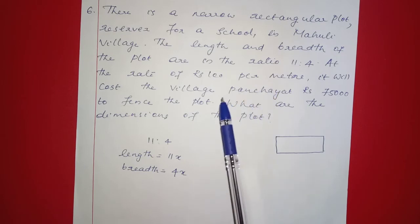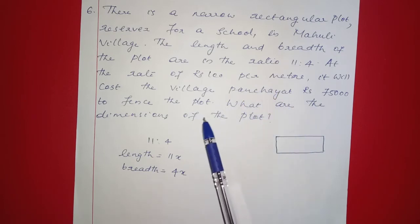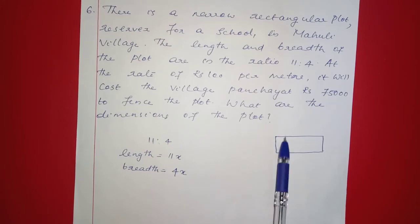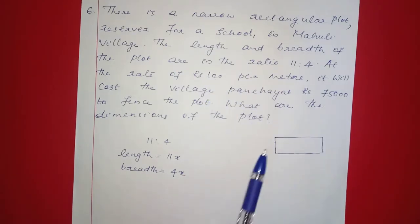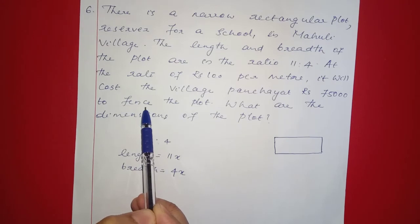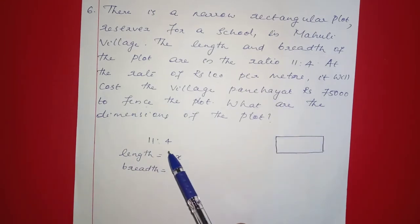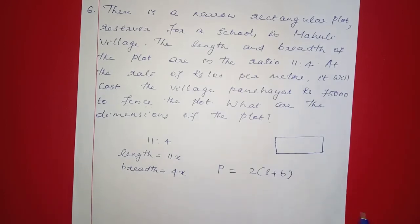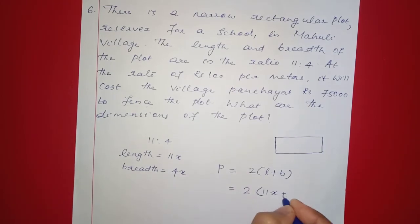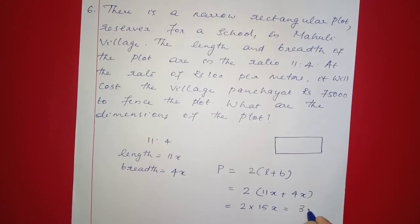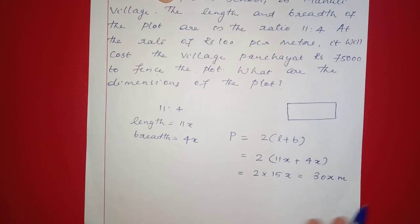At the rate of 100 rupees per meter, fencing the plot costs 75,000 rupees. The cost depends on the perimeter. The perimeter of a rectangle is 2 into (length plus breadth), which equals 2 into (11x plus 4x), giving 2 into 15x, which equals 30x meters.